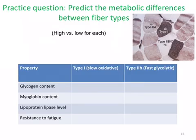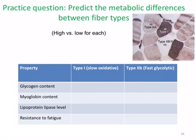Practice question: Can you predict the metabolic differences between the different fiber types? Try to go through this chart and see if you can figure out which type is likely to have the higher glycogen content, myoglobin content, lipoprotein lipase activity in the lumen of capillaries surrounding these fiber types, and resistance to fatigue.